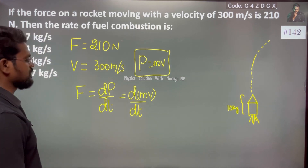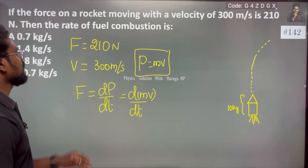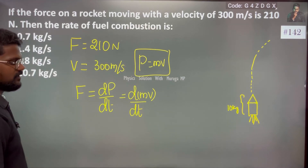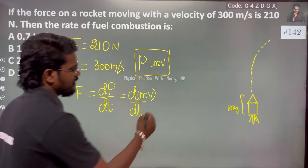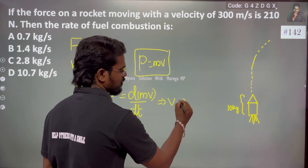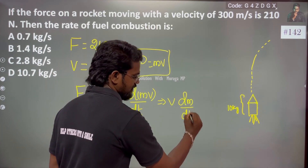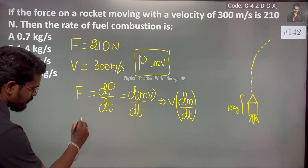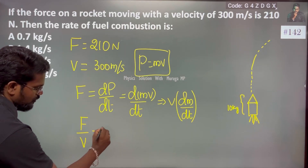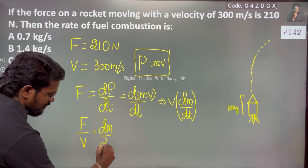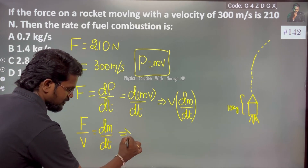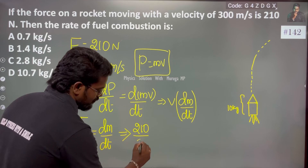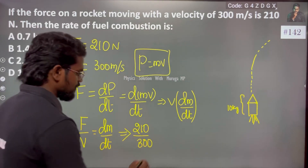They are asking the rate of fuel consumption. Since velocity is 300 and it is not changing, I can write F = v·(dm/dt), so dm/dt equals force divided by velocity. That becomes dm/dt = F/v. The velocity of the object is 300, so when you do the calculation you will get the answer.